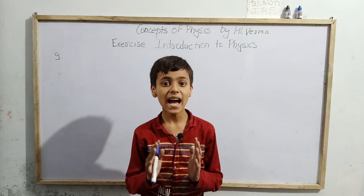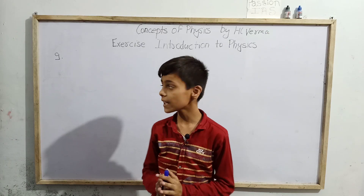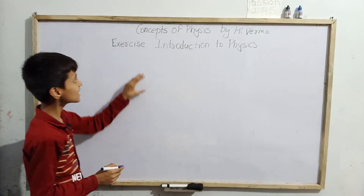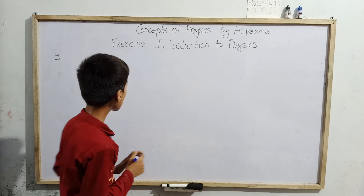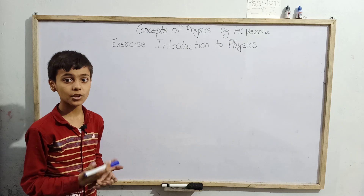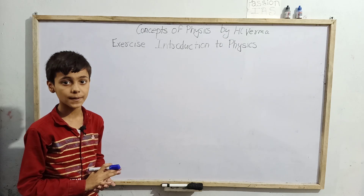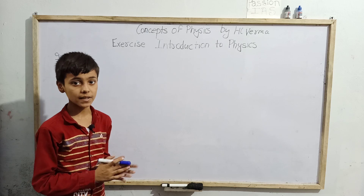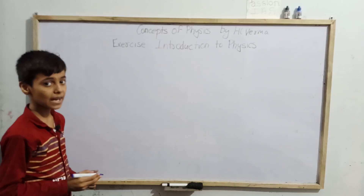Hello students, I am Sarim Khan, studying in fifth standard. Today we have question number nine from the exercise of Introduction to Physics, that is from Concepts of Physics by H.C. Verma. The question is: the average speed of a snail is 0.020 miles per hour and that of a leopard is 70 miles per hour. Convert these speeds into SI units.